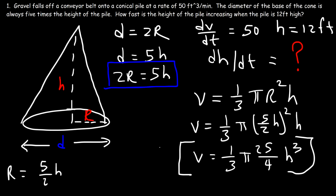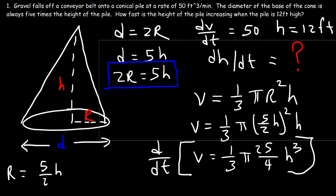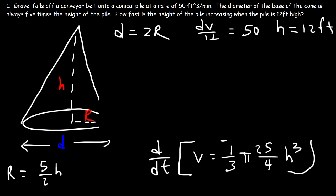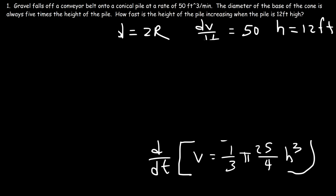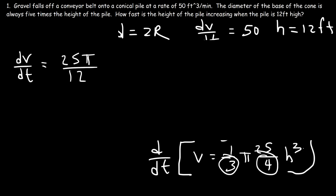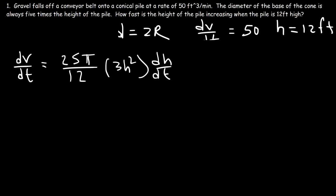Now let's differentiate both sides with respect to time. The derivative of V gives dV/dt. We can rewrite the constants: 25π over 12, and the derivative of H cubed using the power rule is 3H squared times dh/dt. So dV/dt equals (25π/12) times 3H squared times dh/dt. Now let's plug in everything and calculate dh/dt.